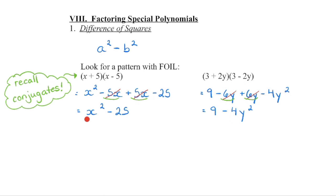When we start with a difference of squares, we set up our conjugates — one is a plus, one is a minus. We square root the first term to get the first term in each bracket, and then we square root the last term to get the last term in each bracket.